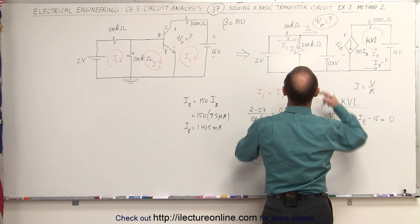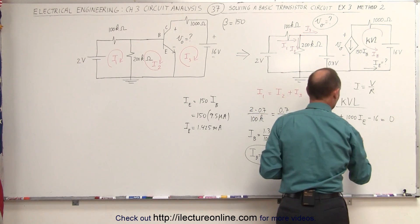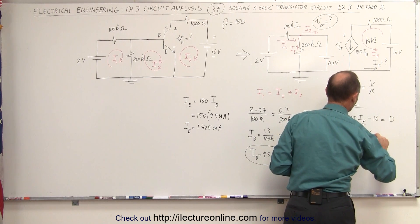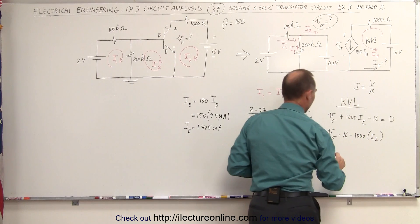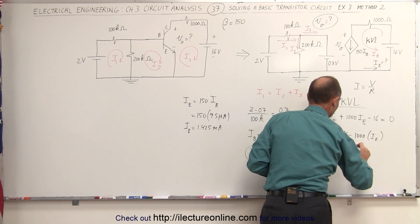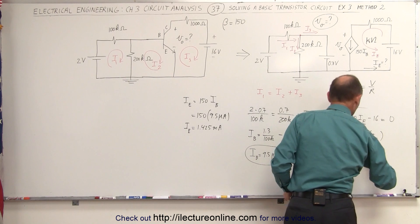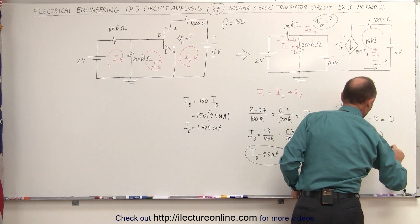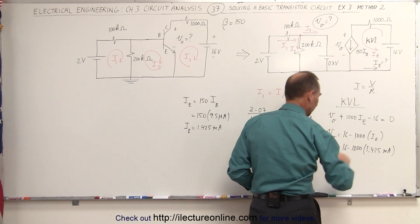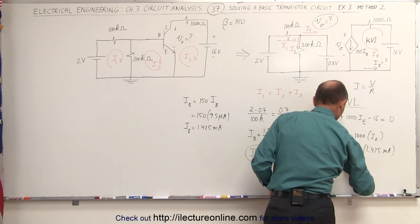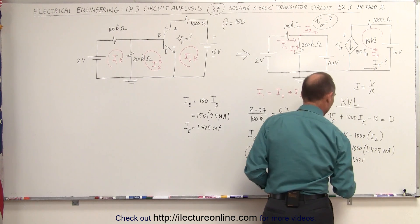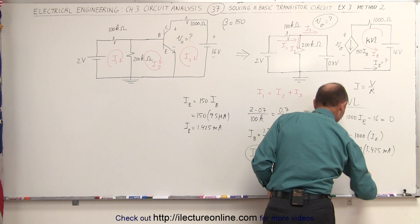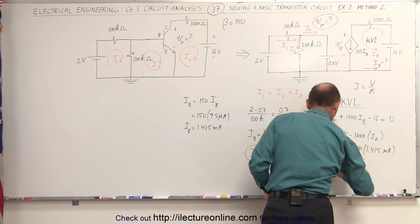And if I plug that in, we can then solve for V sub O. V sub O — that's the voltage across the transistor — is equal to positive 16 volts minus 1000 times I sub E, and that's equal to 16 volts minus 1.425 milliamps. Multiplying that, you get 16 minus 1.425, and that's now in volts, so this is equal to 14.575 volts across the transistor.